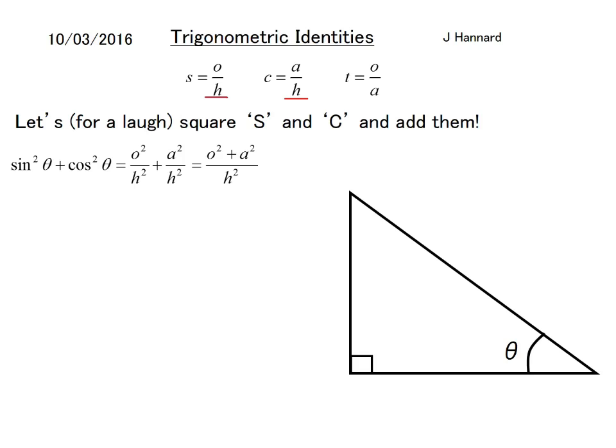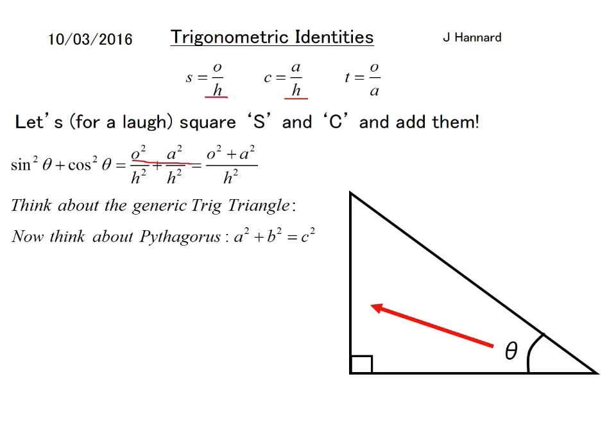That equals o squared plus a squared over h squared because when you add fractions with like denominators it's just the addition of the tops. But think about Pythagoras: a squared plus b squared equals c squared. So think about the generic trig triangle which is opposite, hypotenuse, and adjacent.